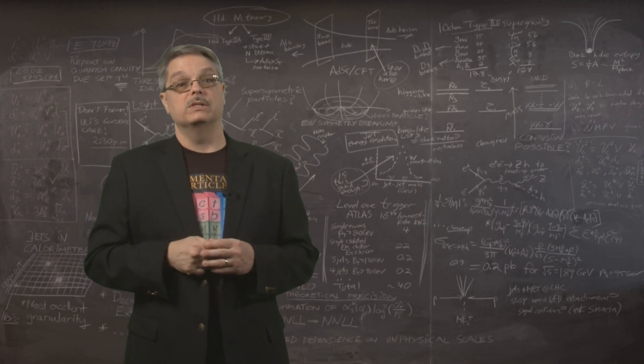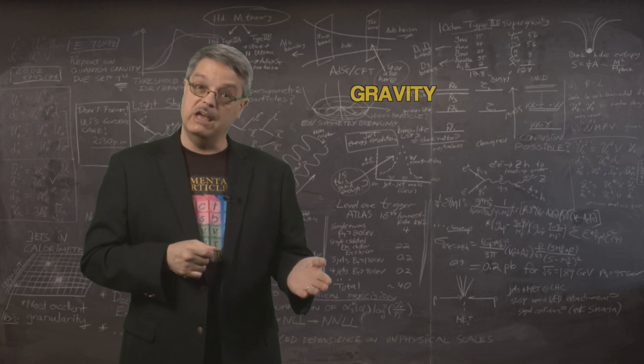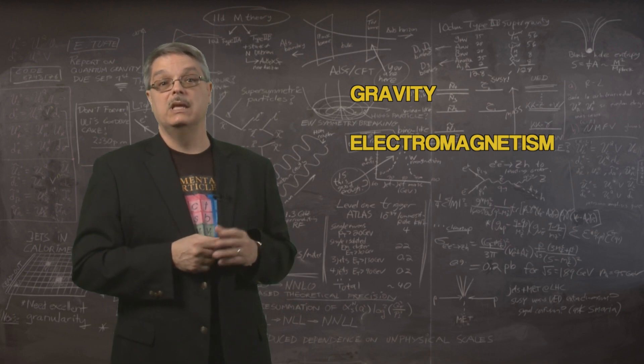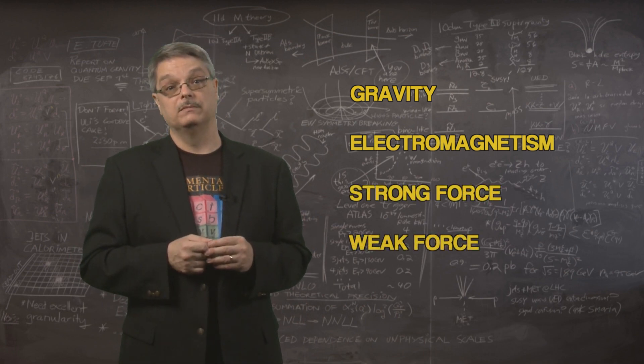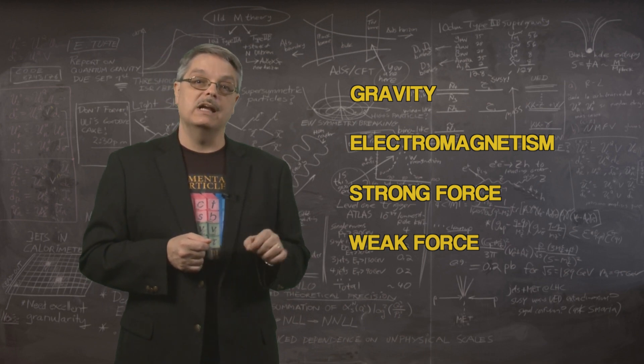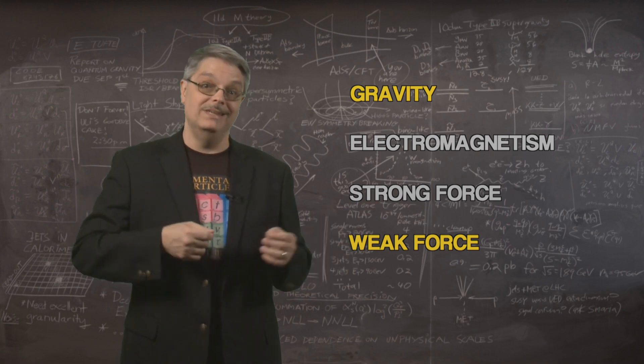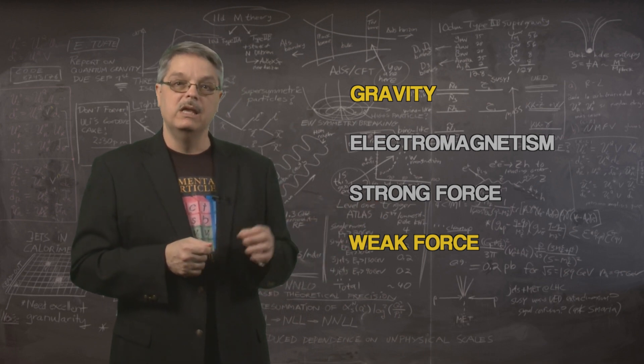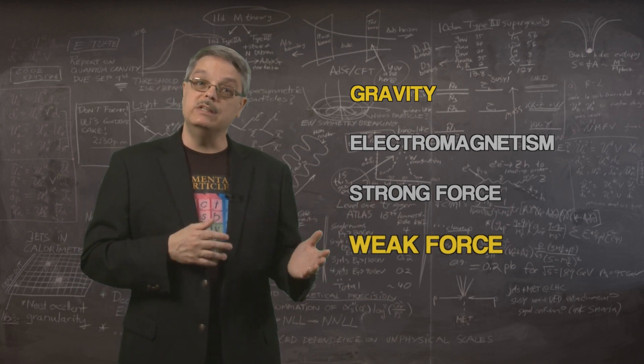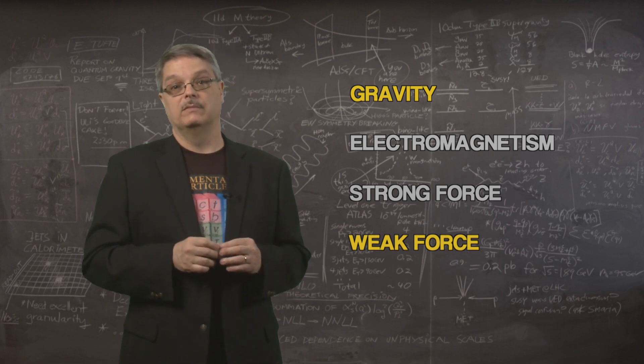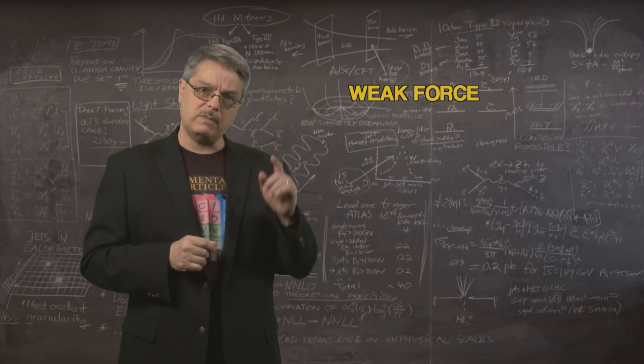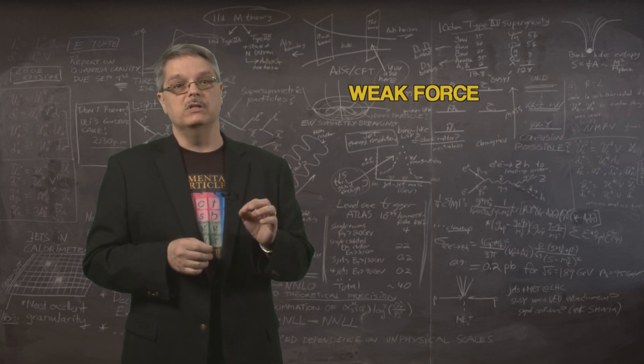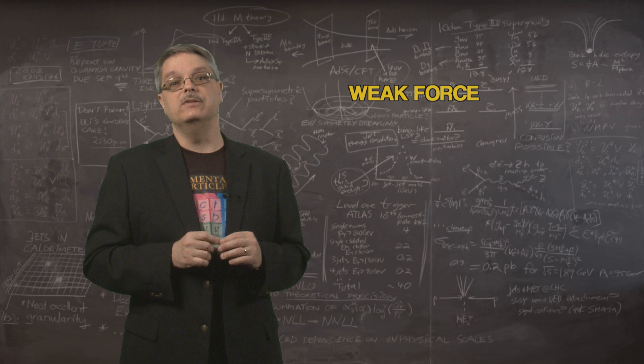There are four known forces: two familiar ones called gravity and electromagnetism, and two that aren't familiar called the strong and weak nuclear forces. Neutrinos do not interact with the strong and electromagnetic forces. We know that because if they did, they'd be very easy to see. Neutrinos do experience the weak nuclear force and gravity. Of the two, the weak force is the stronger, by far. For all practical purposes, neutrinos interact only via the weak nuclear force.